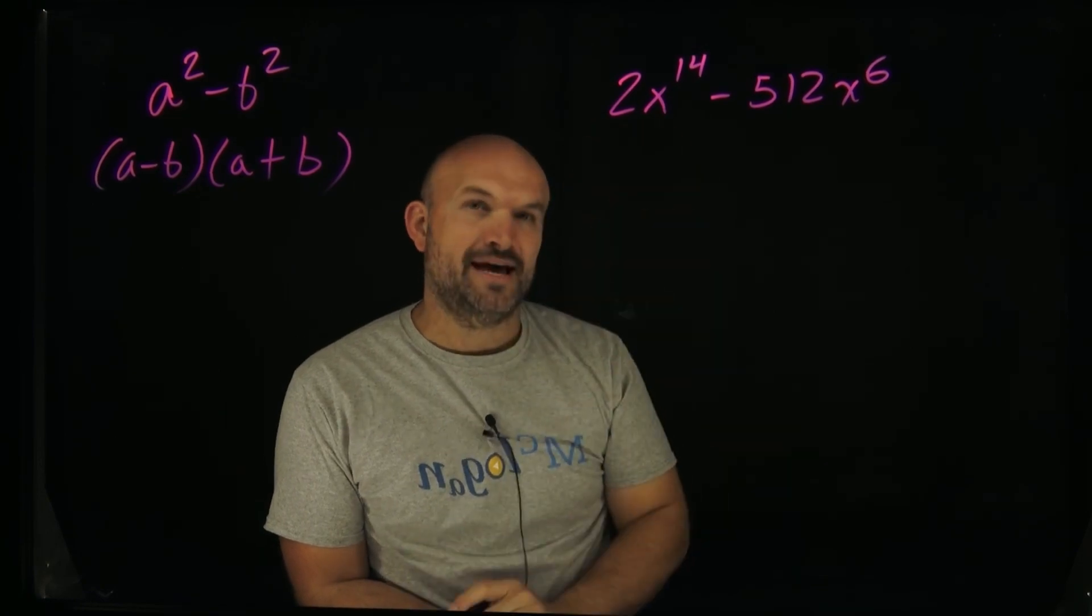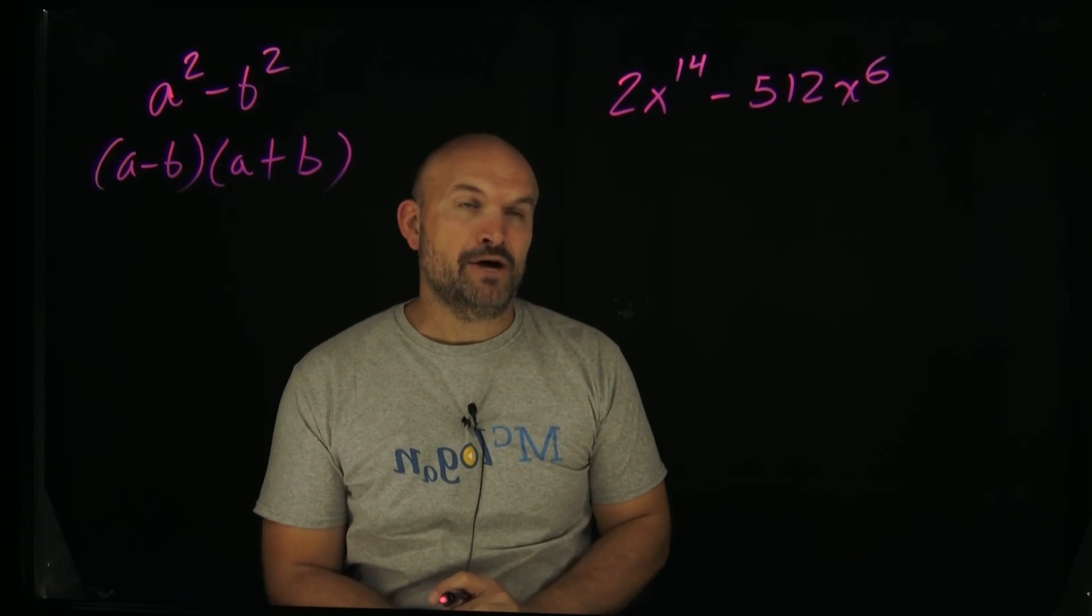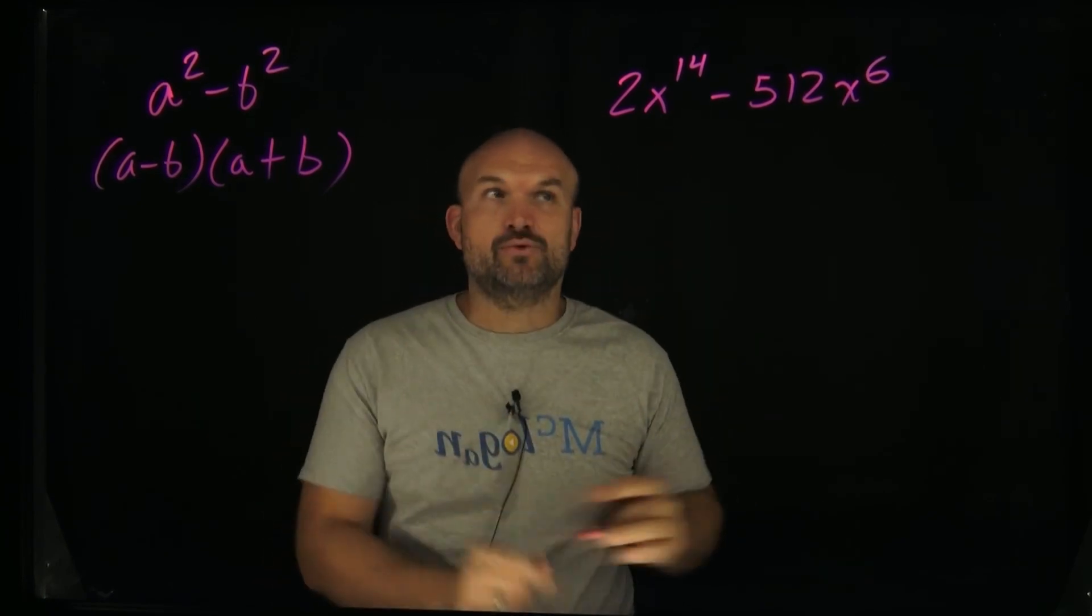But the problem is this 2, I cannot do that. And if you know about 512, you'd recognize that that's not a square number either. So you have to have the whole term to be rewritten as something squared.